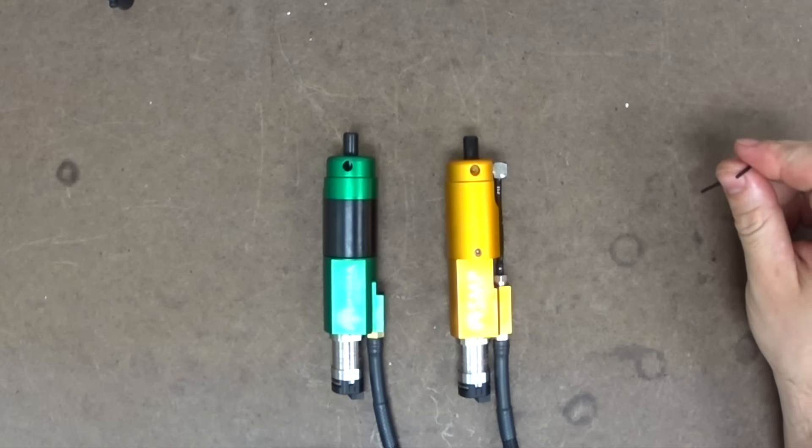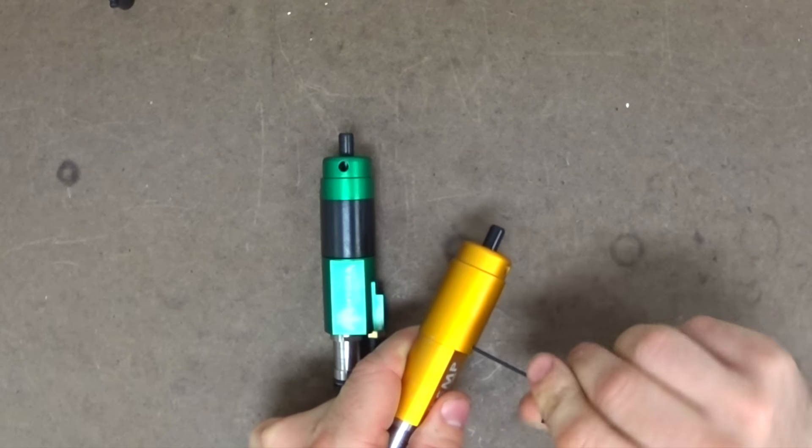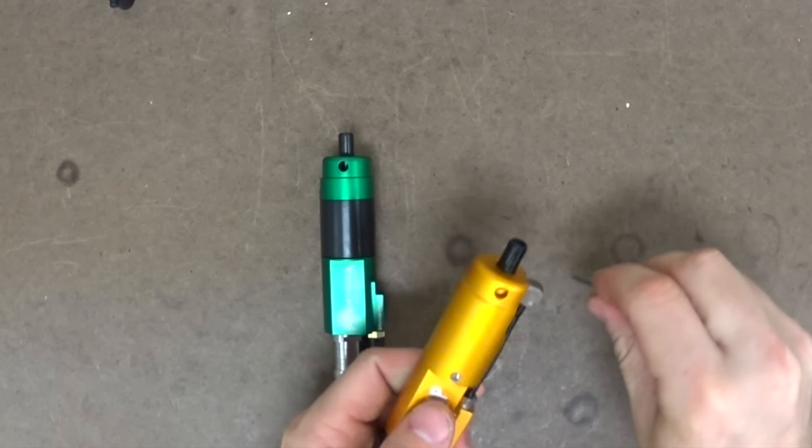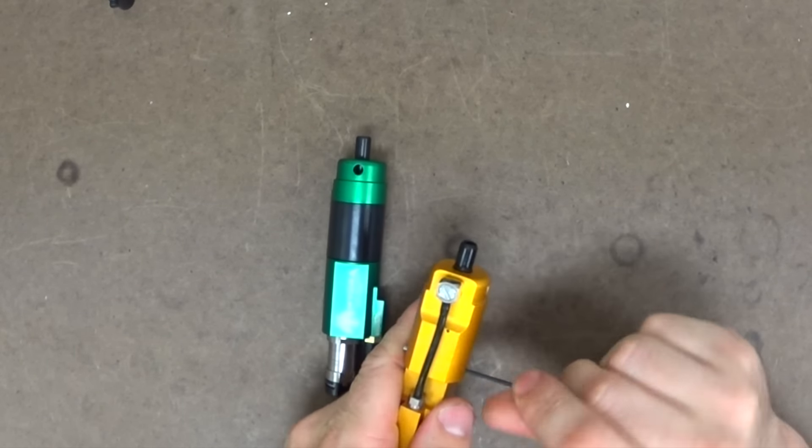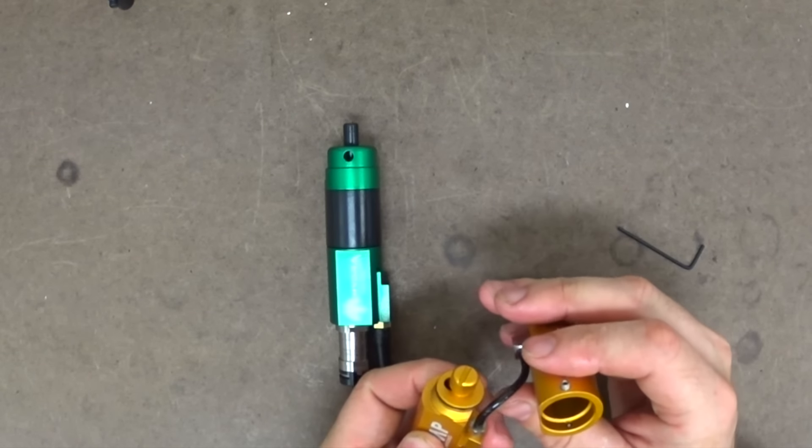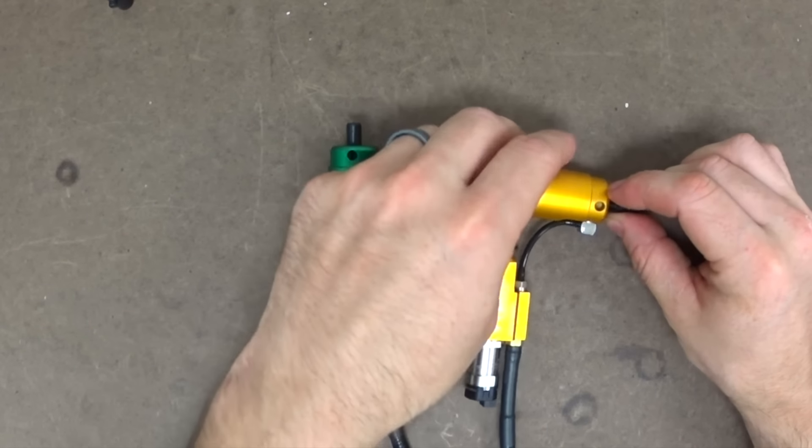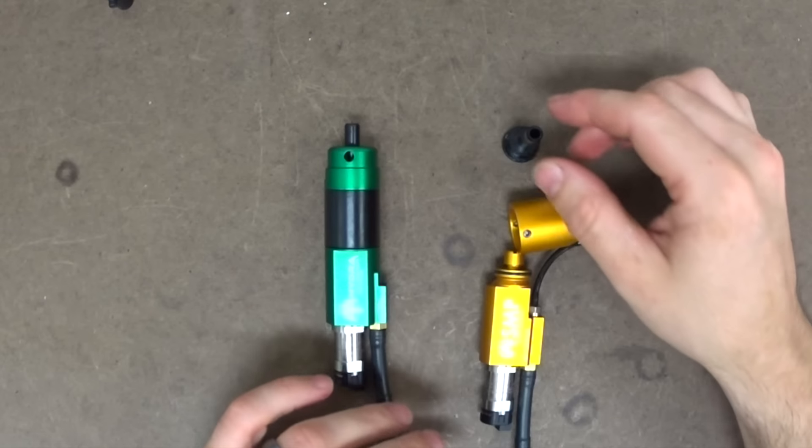Let's go ahead and break them apart and see what we have inside. For the S&P, the disassembly is very simple. You have two little screws, one on each side. Pull the nozzle forward, and the two halves come apart. If we wanted to, we could disconnect the air line, but there's really no need for it. That's the S&P.